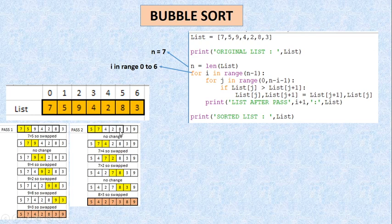Basically हो क्या रहा है — one element in each pass is bubbled out at its correct location, and that is why we call it Bubble Sort.